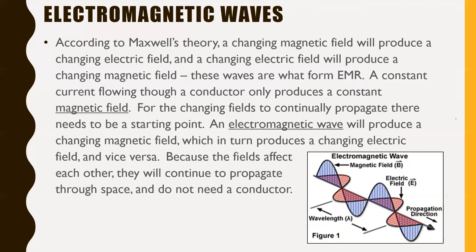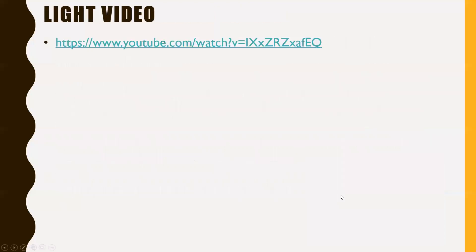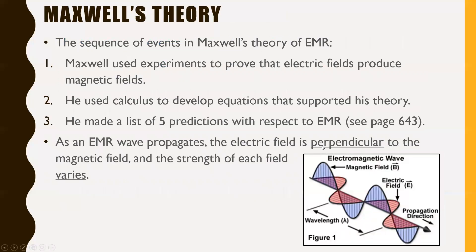There is a very rapid interaction between an electric field and a magnetic field on a very small scale to produce that electromagnetic wave. The blue wave in the picture represents the magnetic field, and the red one represents the electric field. Notice how they act perpendicular to each other, and when you have maximums in one direction, it swings back around to give you minimums in the other direction. This was also the topic of a video you were asked to watch before this lesson.